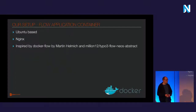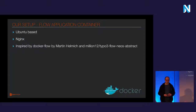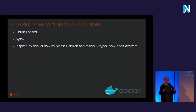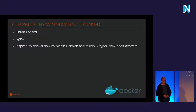KubeLego combines Kubernetes and Lego — Let's Encrypt in Go, since it's written in Go language. Our application container is our Flow app. It is Ubuntu-based, running Nginx, and is heavily inspired by two projects: Docker Flow by Martin Helmich from Midwald, and Million12, which really helped us in the beginning but features too many things we don't actually need. We finally decided to build it on our own, which makes it a lot smaller and faster.